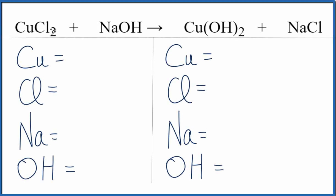In this chemical reaction we have copper chloride plus sodium hydroxide. Let's count the atoms up. We have one copper, two chlorines, one sodium,